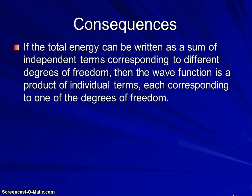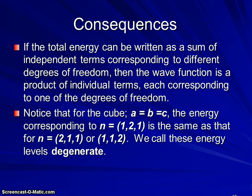Now the consequences of this are pretty interesting. If the total energy can be written as a sum of independent terms corresponding to different degrees of freedom, then the wave function is always going to be a product of individual terms, each corresponding to one of those degrees of freedom. So that for the cube - if it is a cube, if a equals b equals c, the lengths are all three the same - then we have levels of degeneracy. If n_x is 1 and n_y is 2 and n_z is 1, we'll get the same energy that we did for 2,1,1 or for 1,1,2. So we've just mathematically generated degenerate energy levels.